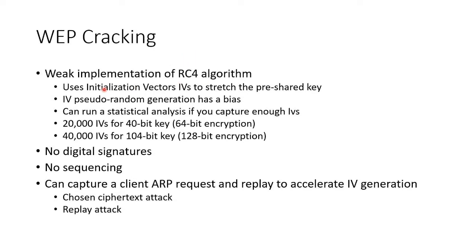WEP uses initialization vectors to stretch a pre-shared key. The pre-shared key is originally only 40 bits, and a 24-bit initialization vector is added to make it seem longer. The problem is that the initialization vector is not a true random number — it's pseudorandom and has a bias.